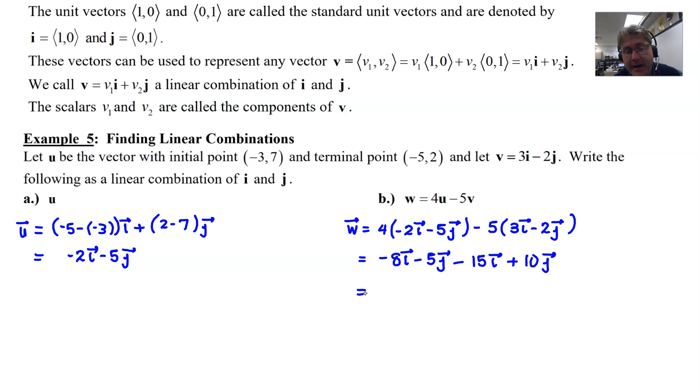By the time you get to this point, you're going to go ahead and combine your like terms. Your -8i minus your 15i do combine for -23 times vector i. And then -5j plus 10j is a positive 5j. And that would be your final answer for part B.